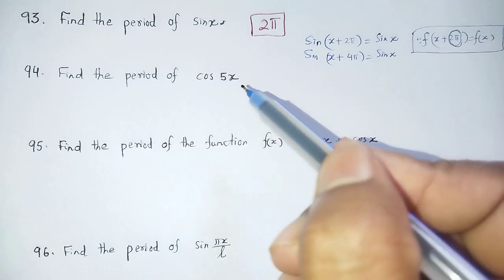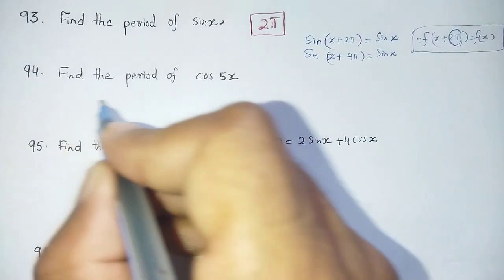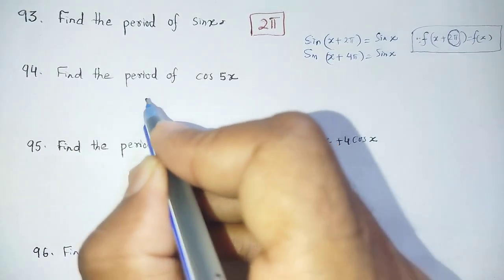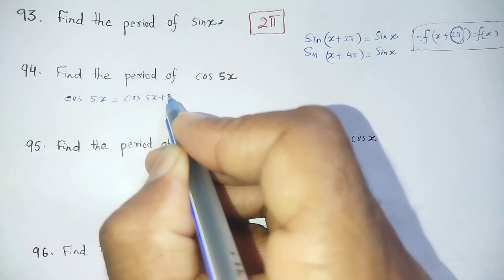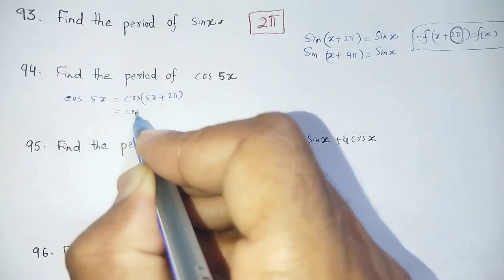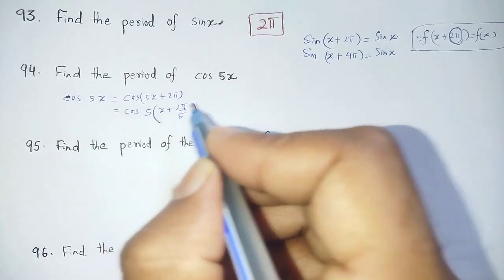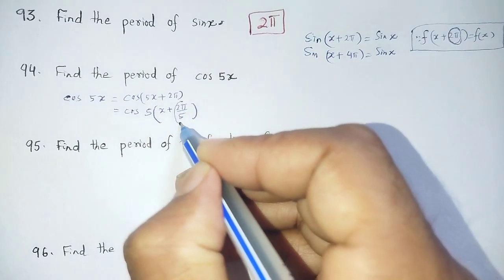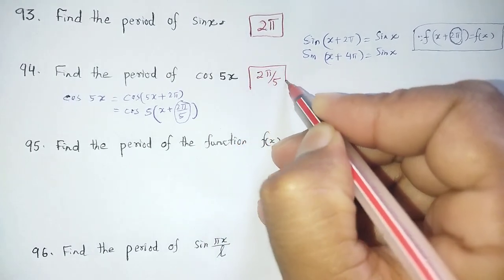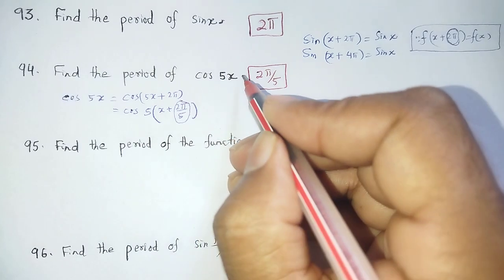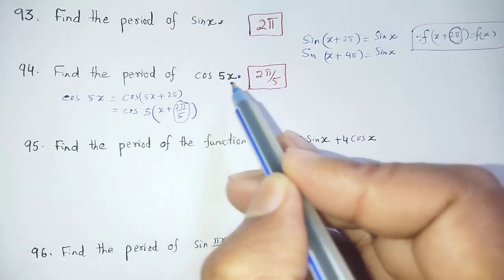Similarly, find the period of cos(5x). We write cos(5x + 2π), and we can factor out 5 to get cos(5(x + 2π/5)). So f(x + 2π/5) = f(x), meaning the period is 2π/5. The period of cos(5x) is 2π/5.